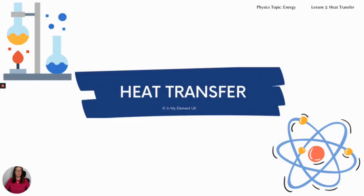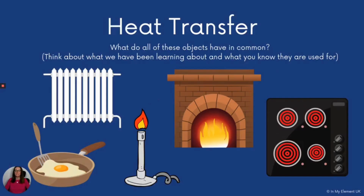Hello and welcome to the physics topic energy, lesson three: heat transfer. We've already looked at energy stores and energy transfers, so today we're going to specifically look at heat transfer. We need to take a look at these images — what do they all have in common? You've got a radiator, a pan cooking an egg, a Bunsen burner, a fire, and a cooker. All of them are involved in heat transfer, whether to cook or warm an object, room, or surroundings.